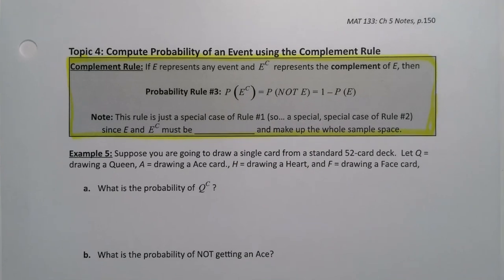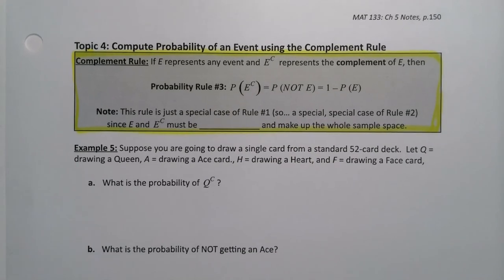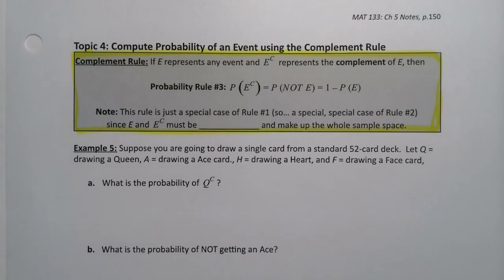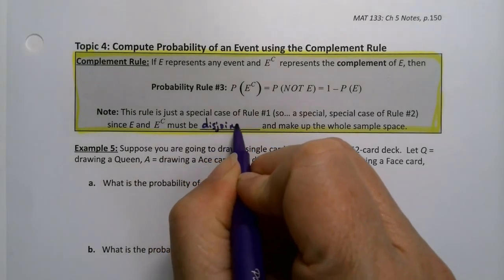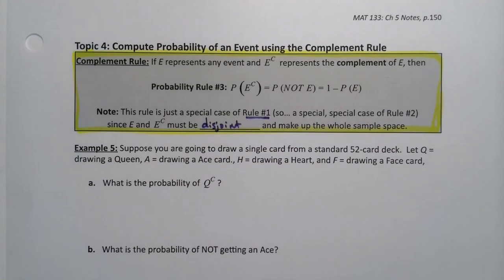And again, this is really just a special case of rule number one because E and E complement are complements of each other, therefore they are disjoint. So really this is the addition rule kind of written differently. It's also really a special case of rule number two, the general addition rule, because E and E complement must be disjoint.